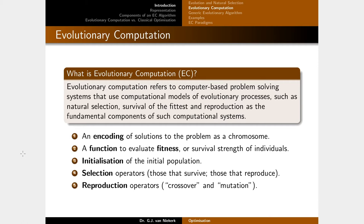Evolutionary computation refers to computer-based problem-solving systems that use various aspects of the evolutionary process in solving problems. These include things like natural selection, survival of the fittest, reproduction, and so forth. There are five key components in any such algorithm, the first of which is an encoding scheme.